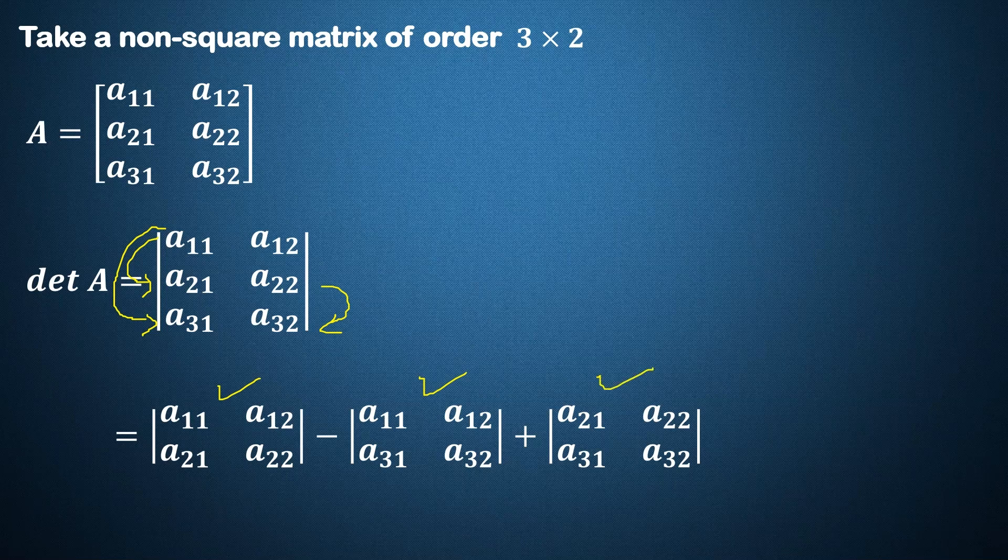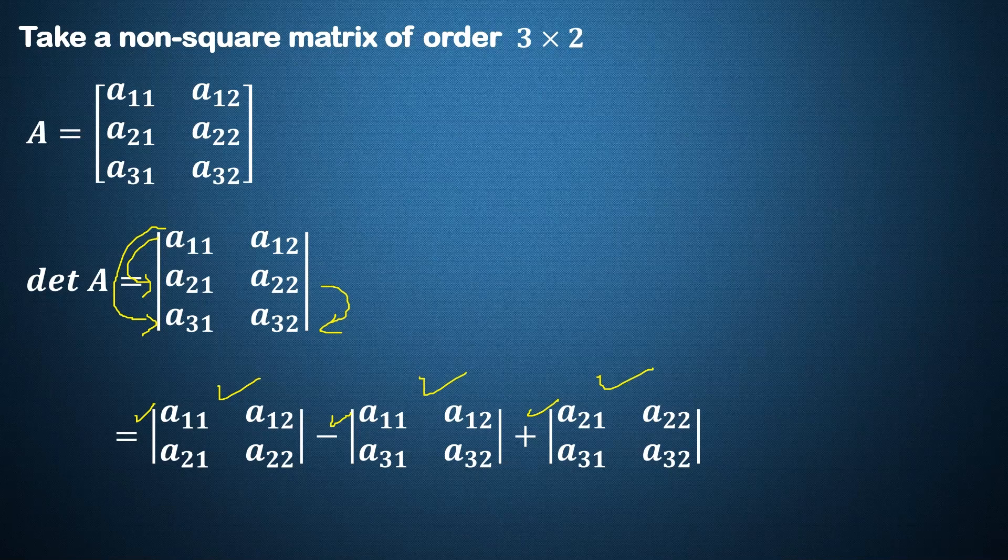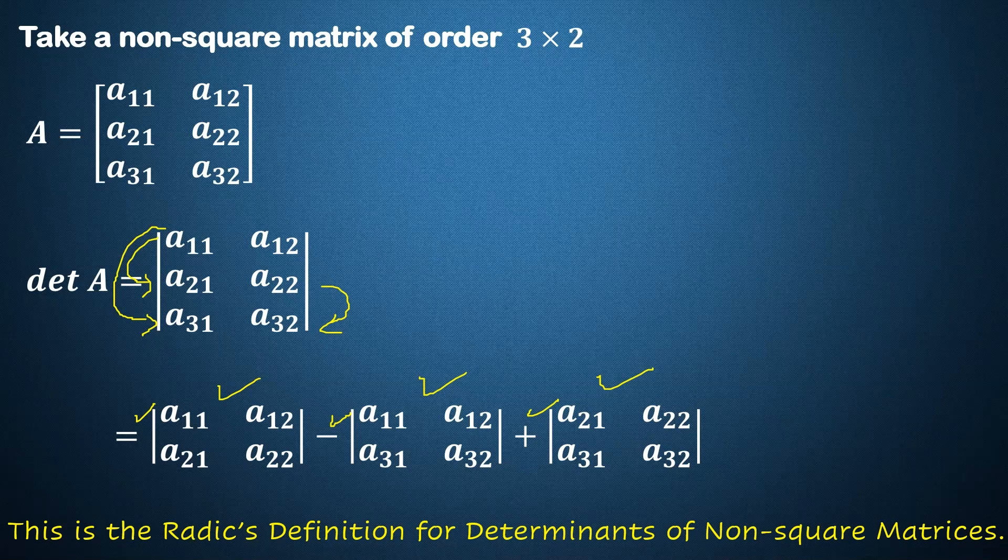The signs plus, minus, plus are due to the cofactors of the elements vertically. This definition is the consequence of Roddick's definition for determinants of non-square matrices.